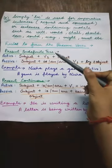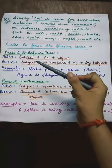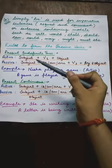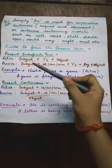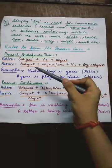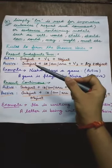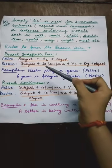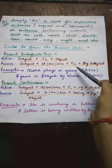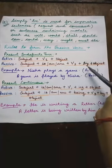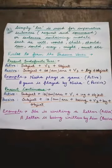Now let's study the rules to form the passive voice. The first tense is present indefinite tense. Active sentence का structure होता है: subject + first form of verb + object. But जब sentence को passive voice में लिखा जाता है, तो sentence structure change हो जाता है: subject + is/am/are + third form of verb + by + object. To understand this rule, let's read one example.